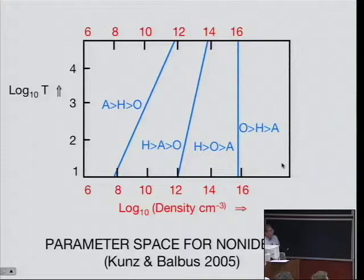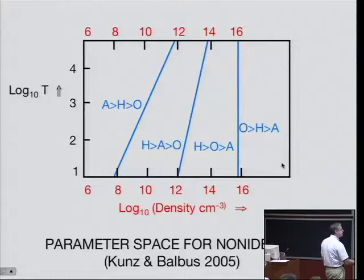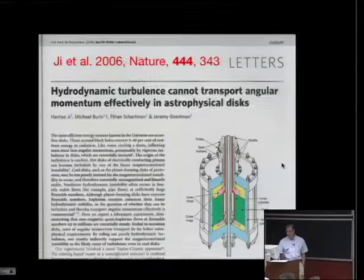I just remind you, this is a parameter space plot that I did a while back with my student, Matt Kunz, just to orient you. The axis here is the density. This is temperature. This is kind of for the regime of protostellar disks. A is ambipolar diffusion. H stands for the Hall electromotive forces. And O is ohmic resistivity. You can see the region where ohmic resistivity dominates is really pretty much in the high density portions of the disk. If you look where models of protostellar disks lie, they kind of lie in this big green blob here where Hall effects are very important.